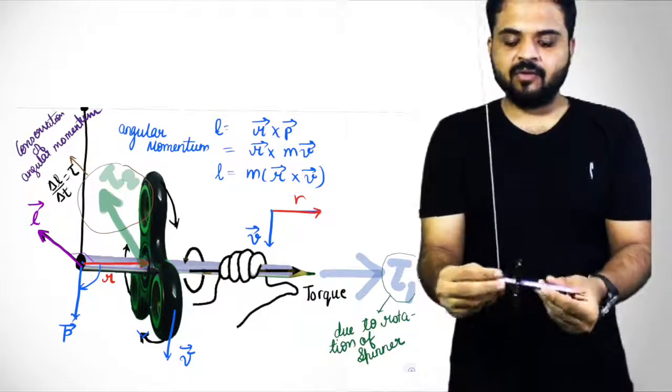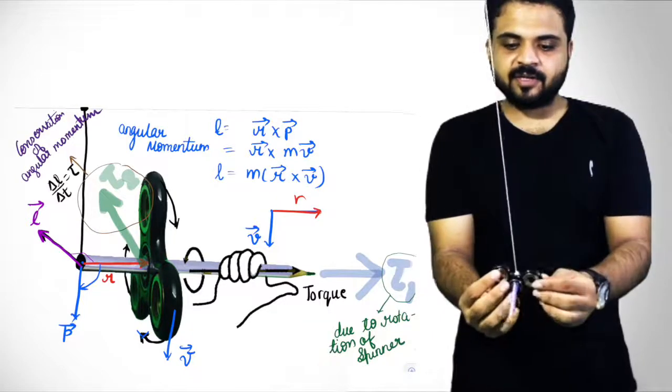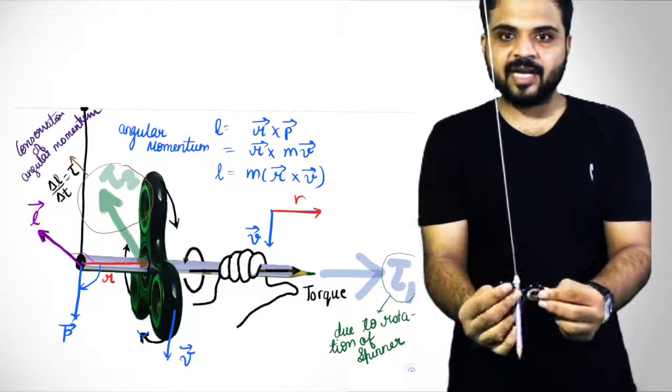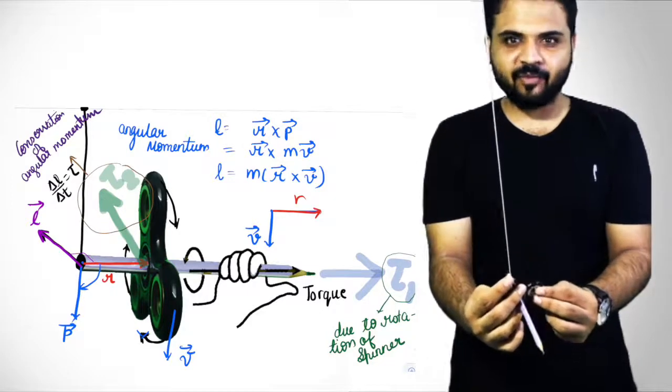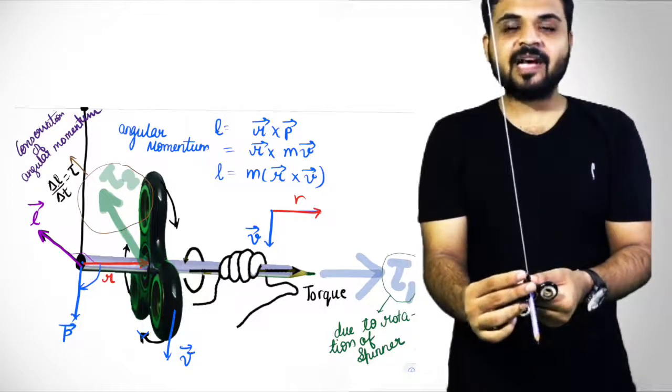But what causes this spinner to spin like this? It is because of angular momentum. See, angular momentum is r cross p.